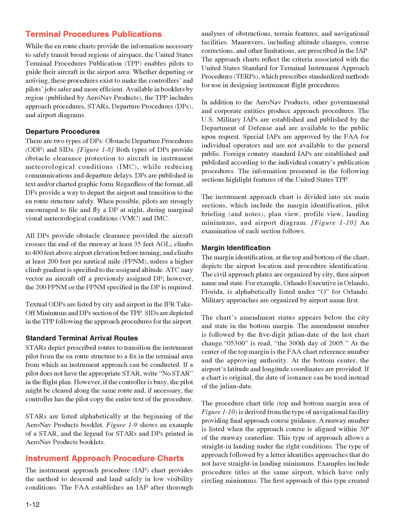When possible, pilots are strongly encouraged to file and fly a DP at night, during marginal visual meteorological conditions, VMC, and IMC. All DPs provide obstacle clearance provided the aircraft crosses the end of the runway at least 35 feet AGL, climbs to 400 feet above airport elevation before turning, and climbs at least 200 feet per nautical mile, FPNM, unless a higher climb gradient is specified to the assigned altitude. ATC may vector an aircraft off a previously assigned DP; however, the 200 FPNM or the FPNM specified in the DP is required. Textual ODPs are listed by city and airport in the IFR takeoff minimums and DP section of the TPP. SIDs are depicted in the TPP following the approach procedures for the airport.